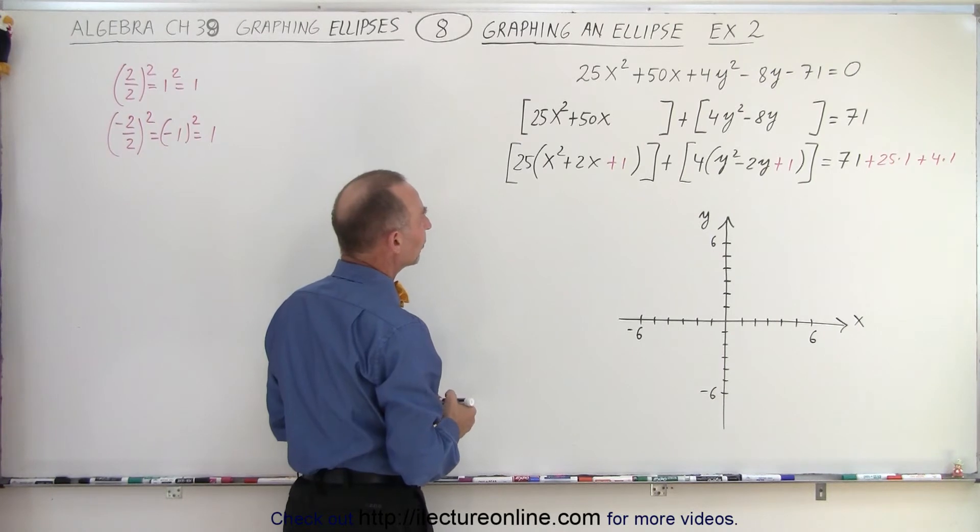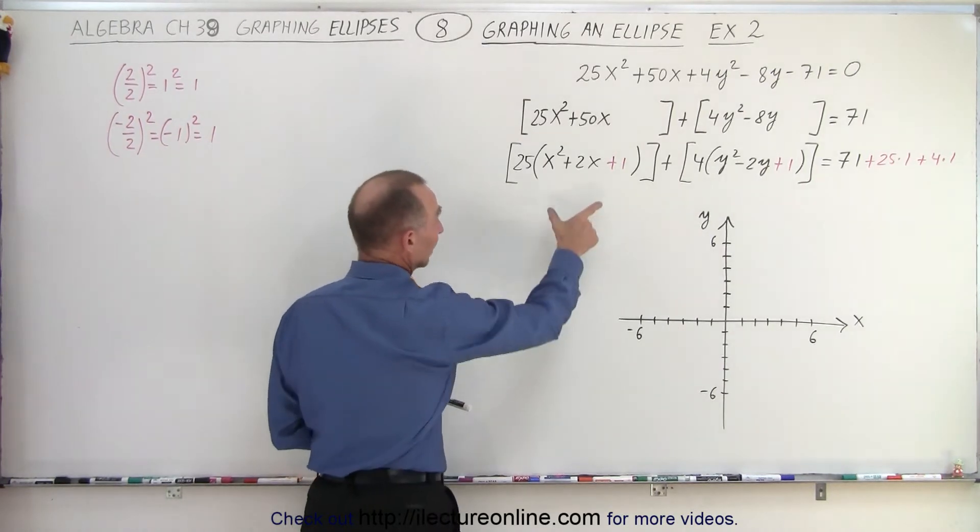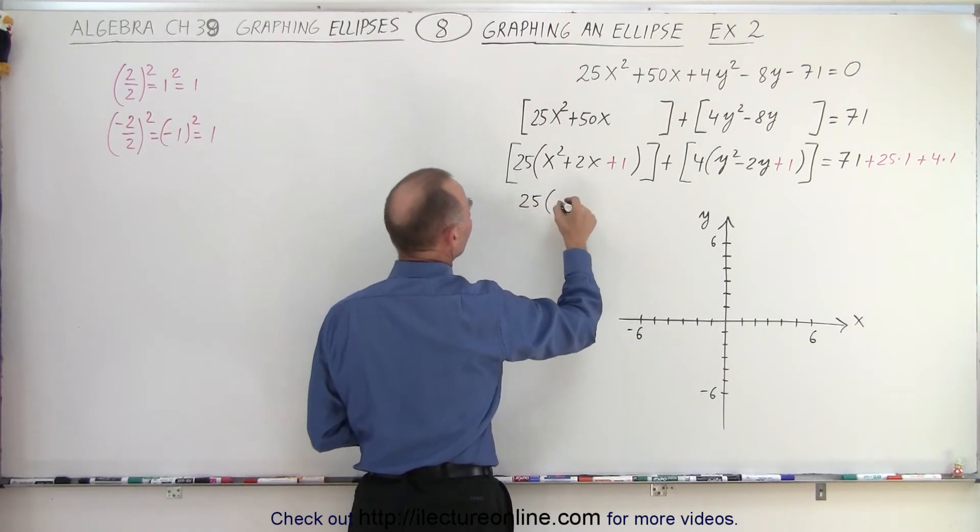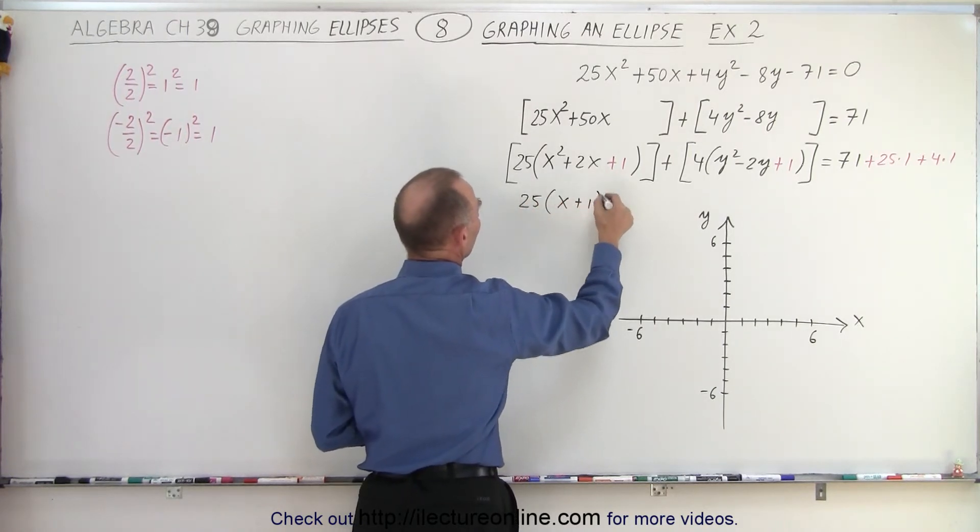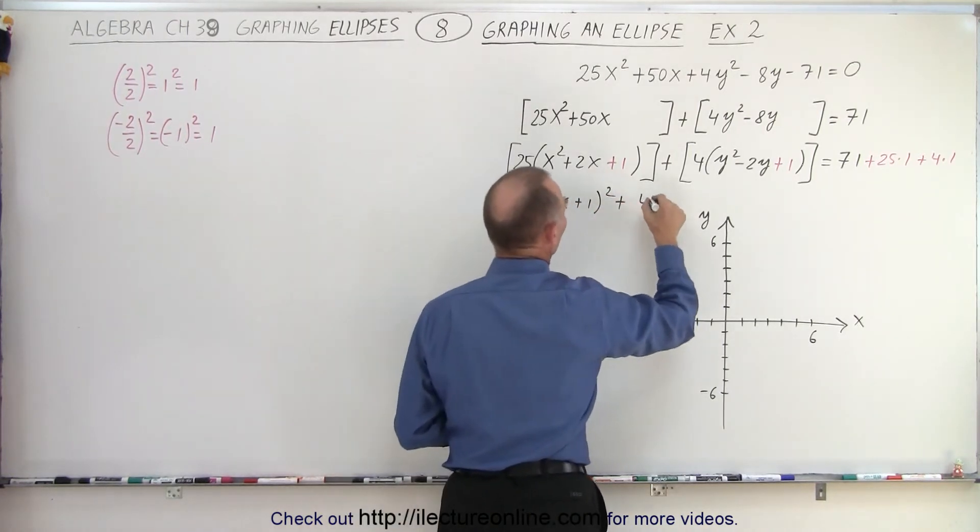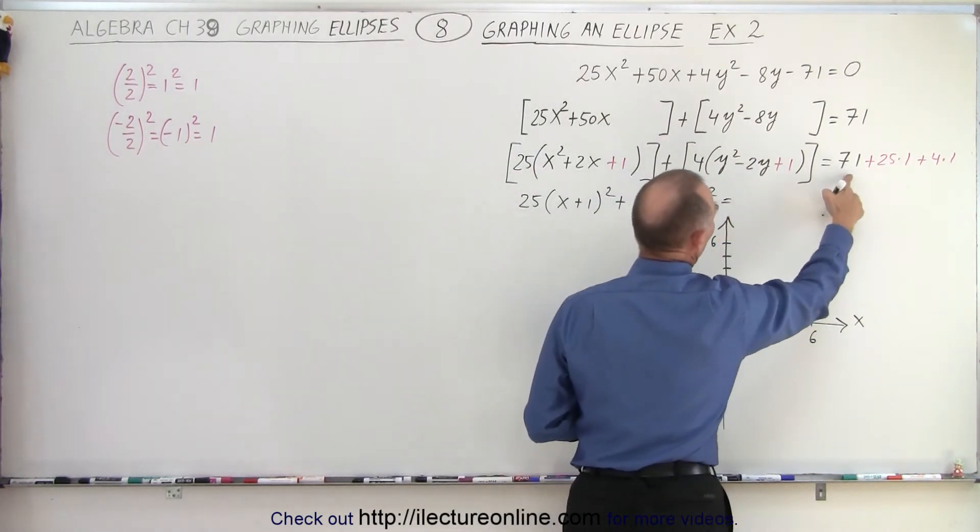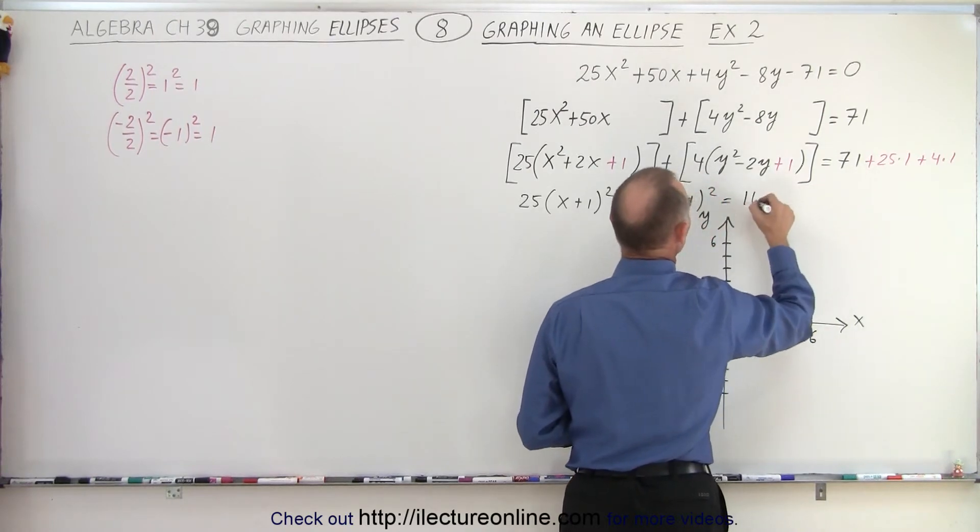Okay, now we can factor. So this becomes 25(x + 1)² + 4(y - 1)² equals 71 plus 75, that equals 100.